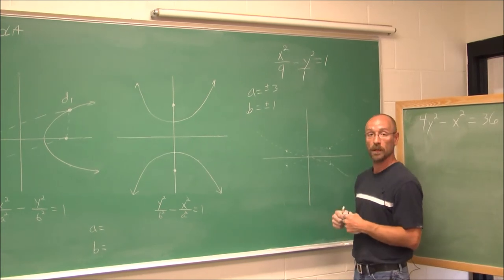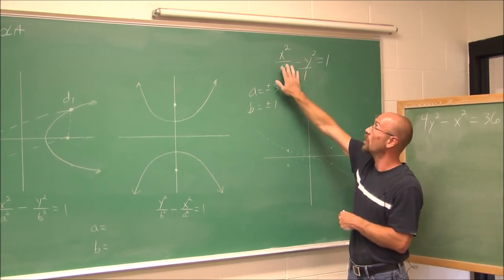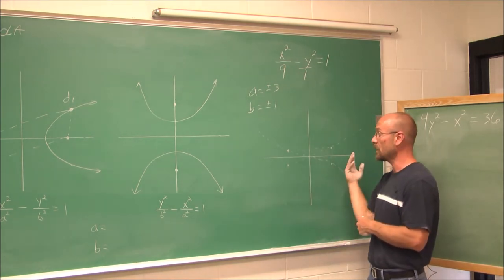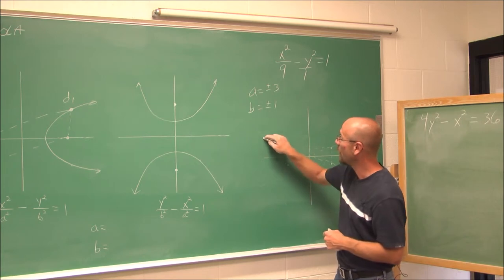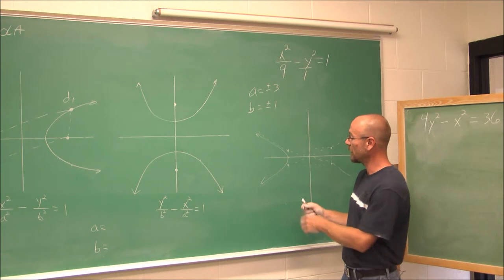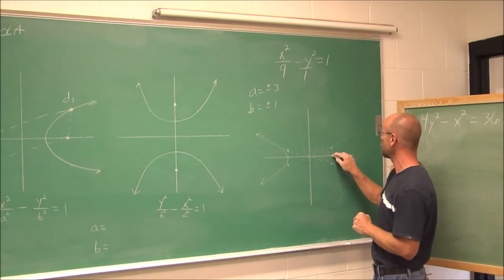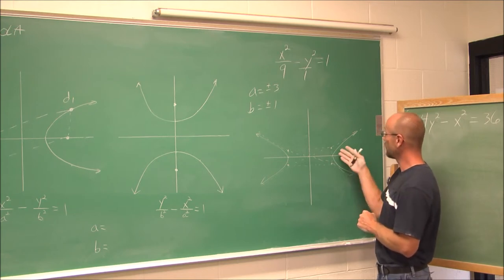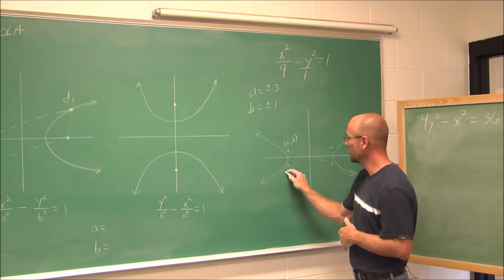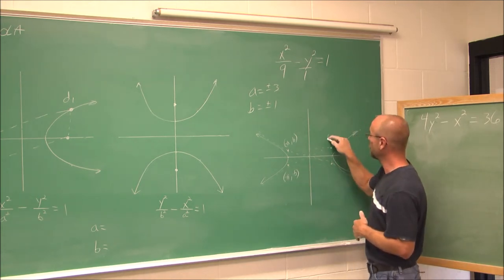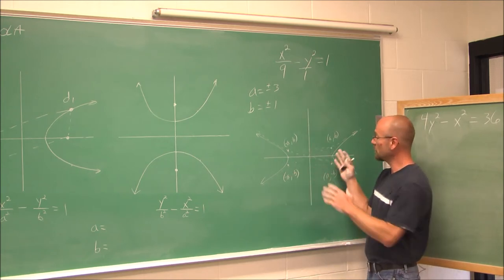Now I'm ready to graph this hyperbola. I ask: does it open left or right, or up or down? The x term is first, so it opens left and right. I start at the edge of the box and draw a curve towards those diagonals — it looks like a parabola opening to the left. I do the same on the other side, drawing towards my diagonals for the parabola opening to the right. The four points — (negative a, b), (negative a, negative b), (a, b), and (a, negative b) — determine the edges of this box.